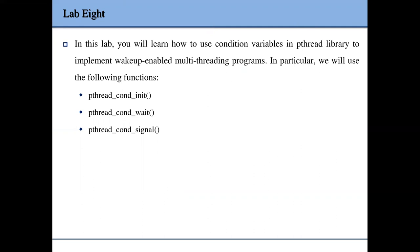In this lab we will learn about some functions related to condition variables. Just like the mutex, the condition variable is another way to achieve synchronization in multi-threading programs. Specifically, it can be used to implement wake-up in multi-threading programs, where some thread may want to sleep or be blocked until some specific event happens, and when that event happens some other thread will wake up those sleeping threads to resume execution.